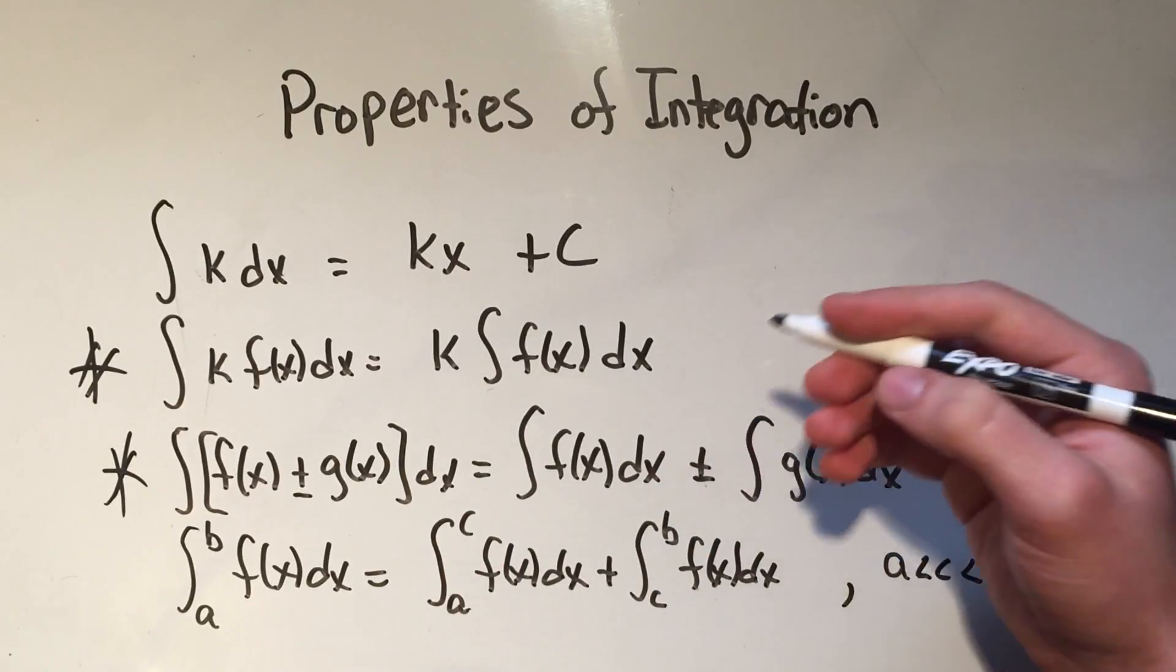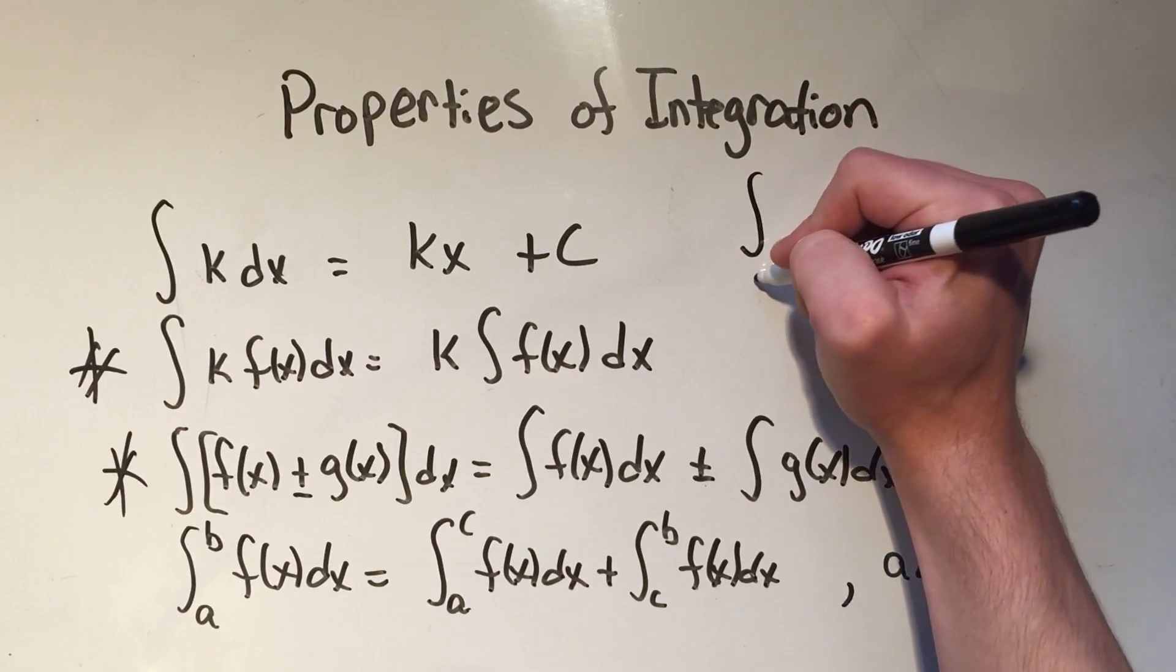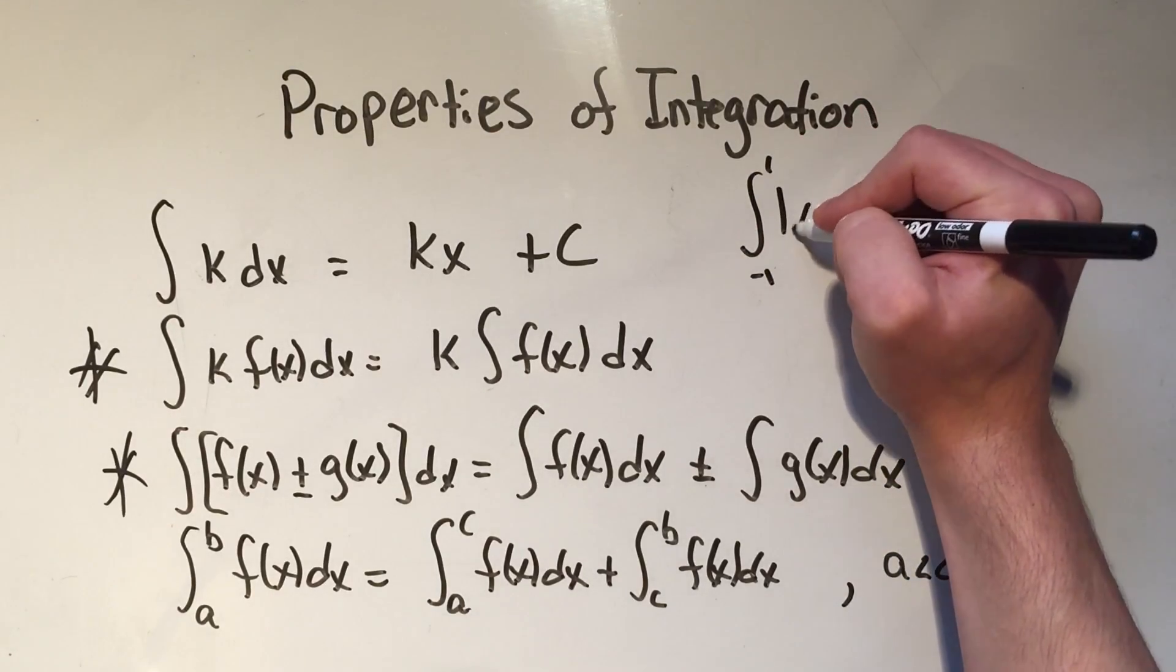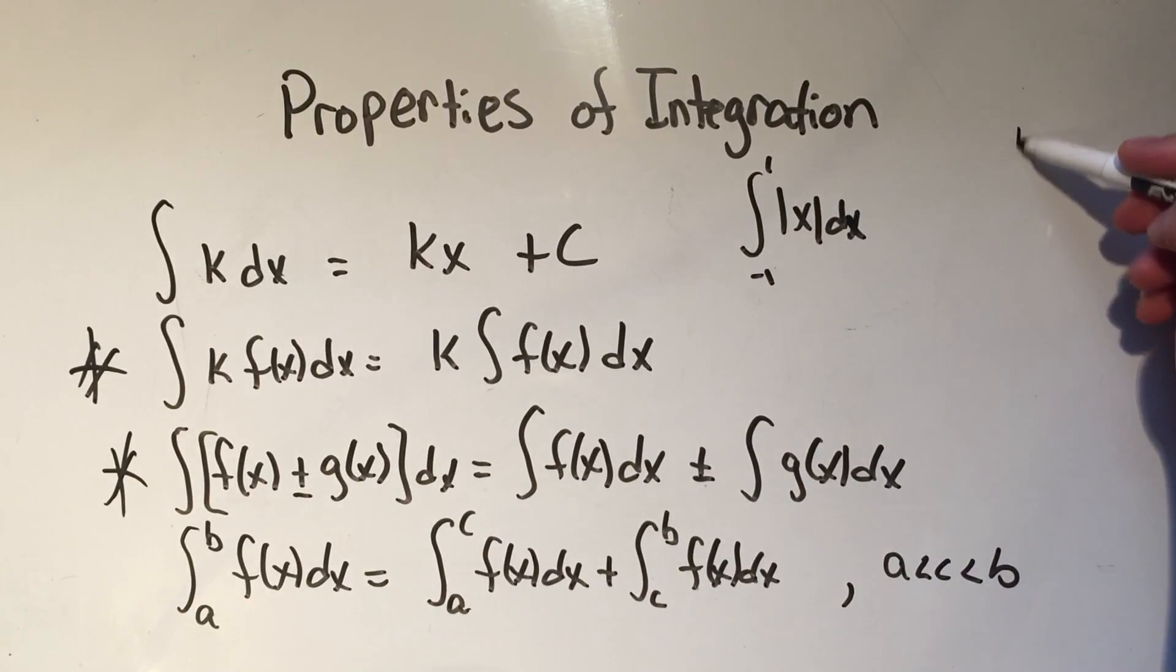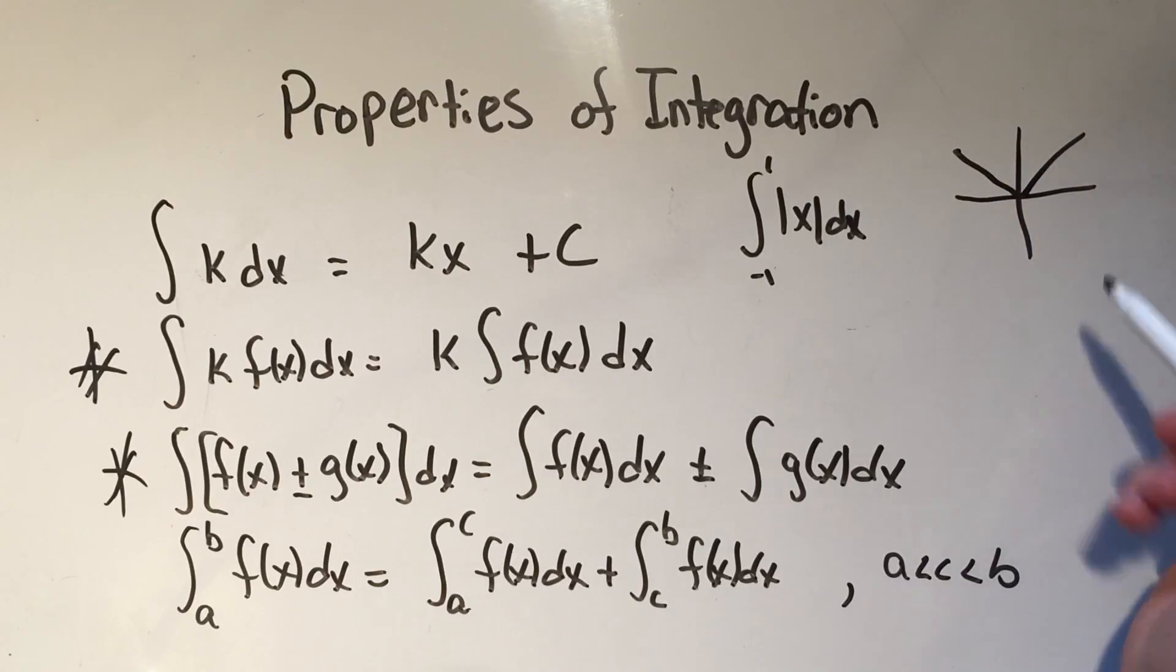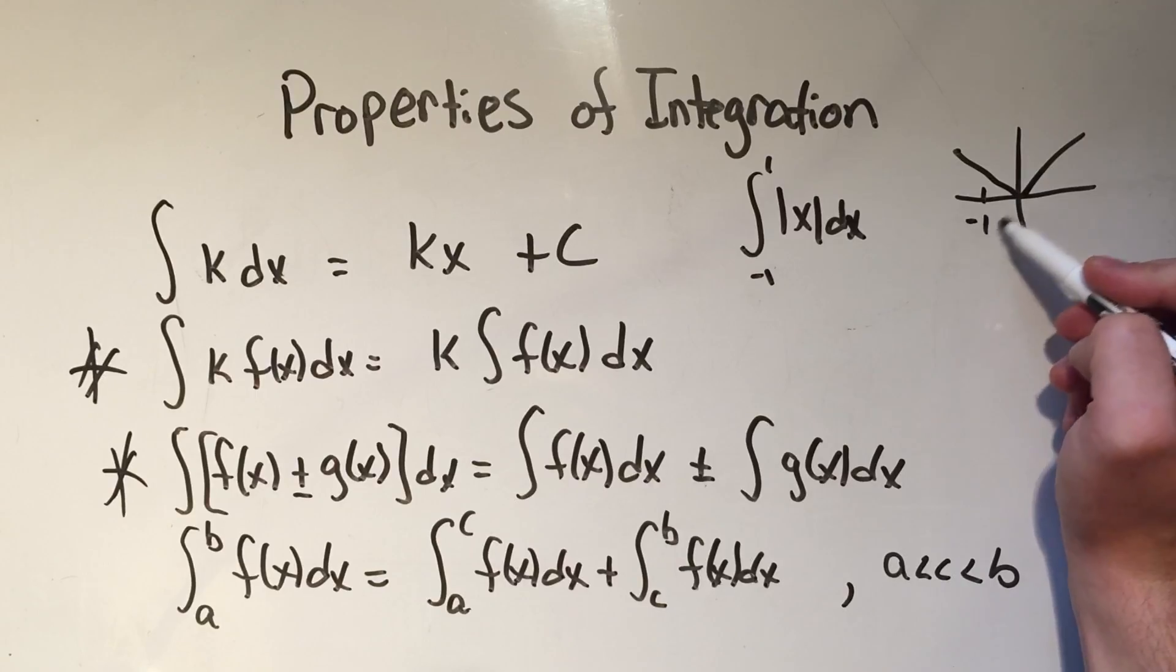So for example, if you wanted to integrate from negative one to one the absolute value of x, this is an example of when you would have to do that. Because the absolute value of x looks like this, and it's two different functions between negative one and one.